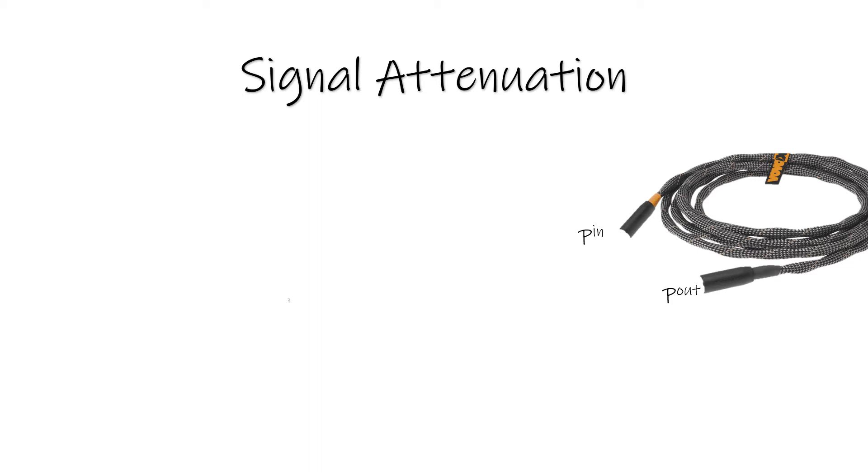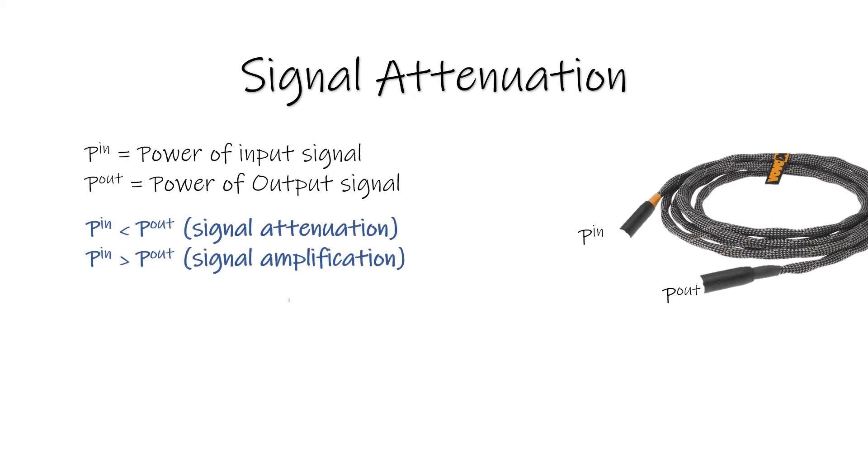In this cable, we call the input terminal power of input and output terminal power of output. When power in the input terminal is lesser than the output terminal, there will be signal attenuation, meaning loss of power. Similarly, when the input terminal power is greater than the output terminal, there will be signal amplification.